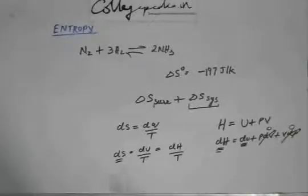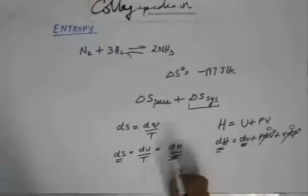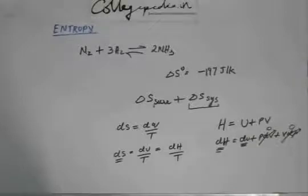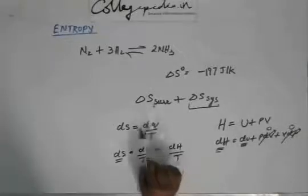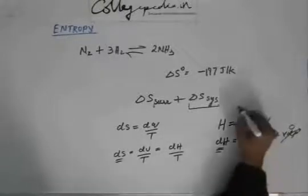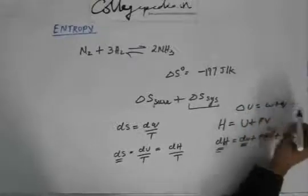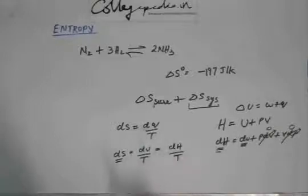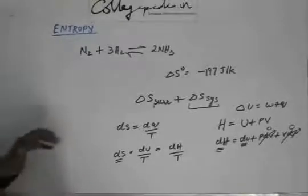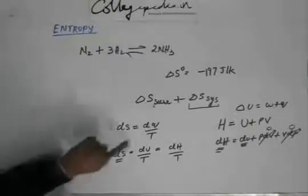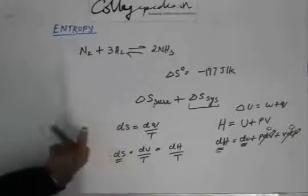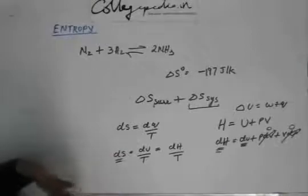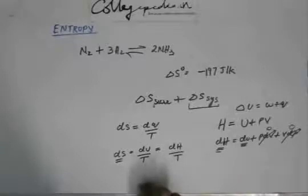Now, this dH is the change in enthalpy, and the enthalpy change of the system is the negative of the enthalpy change of the surroundings. So if dH is positive for the system, it is negative for the surroundings, and vice versa. Similarly, if dq is positive for the system, then dq is negative for the surroundings, and if dq is negative for the system, it is positive for the surroundings.